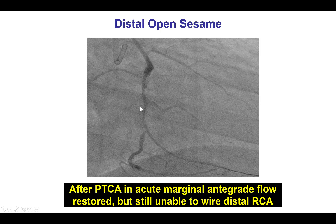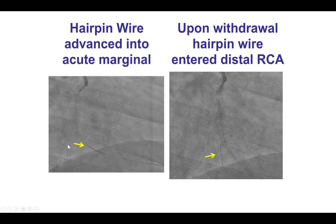Here is an example. This was a CTO of the mid-right coronary artery in which the wire crossed into a large acute marginal branch, but we were unable to advance it into the distal right coronary artery. To solve the problem, we advanced the knuckle all the way into the marginal branch, and then coming back, the wire unraveled and entered into the distal right coronary artery.